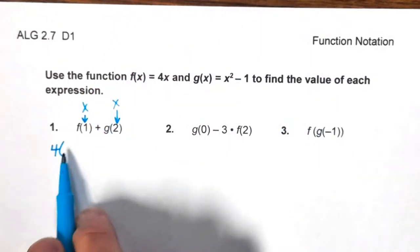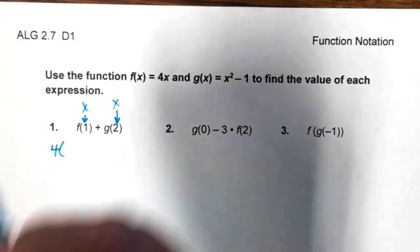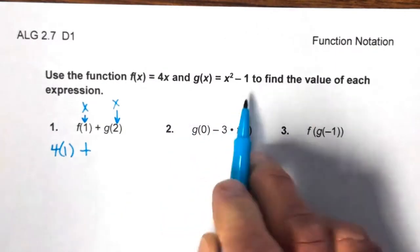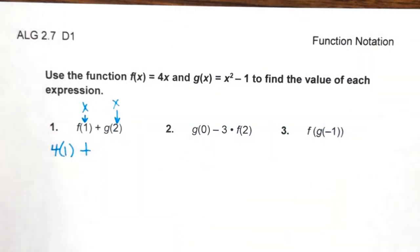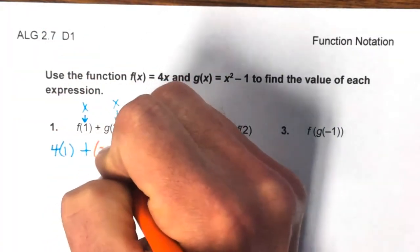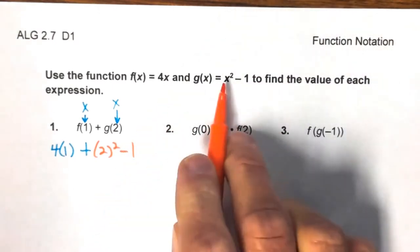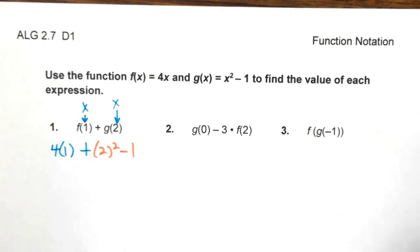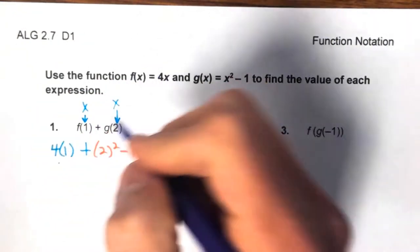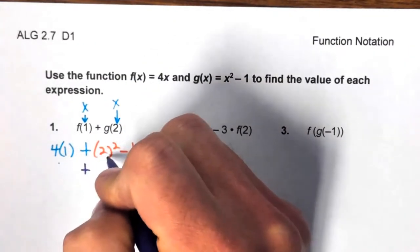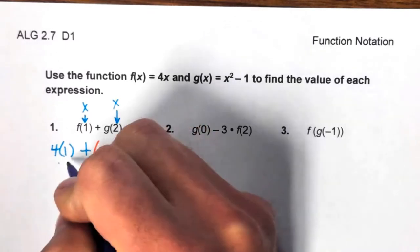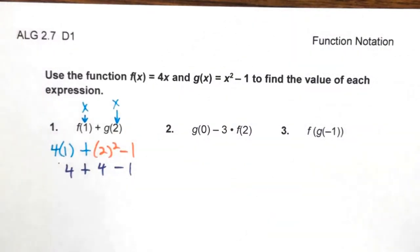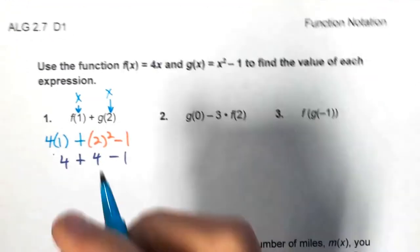Putting it all together: 4 times 1, plus (2² - 1). Using order of operations, we do exponents first: 2 squared is 4. Then 4 times 1 is 4. Bringing down the minus 1, from left to right we do addition and subtraction: 4 + 4 = 8, minus 1 equals 7.